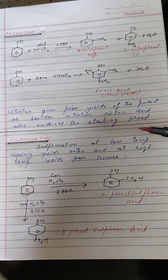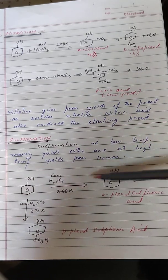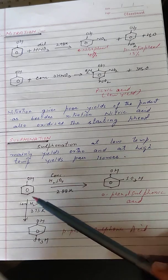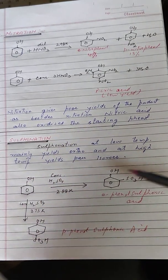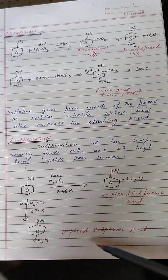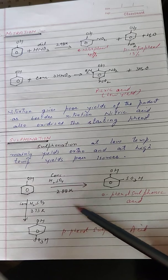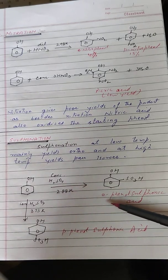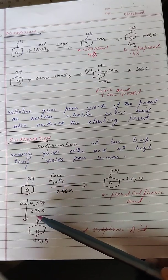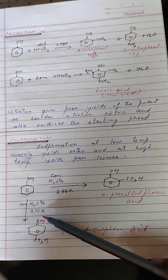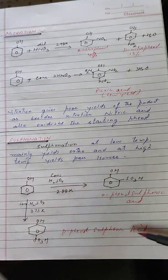Next is sulfonation. Sulfonation at low temperature mainly gives the ortho isomer, whereas sulfonation at high temperature gives the para isomer. For example, using concentrated sulfuric acid at 288 K gives ortho-phenolsulfonic acid, while at 373 K with concentrated sulfuric acid we get para-phenolsulfonic acid.